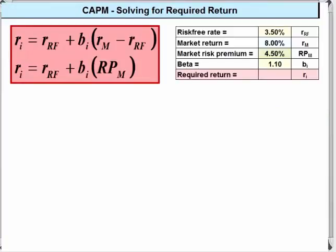In this first example, both the return on the market and the market risk premium are given. This is an easy one. Solving for the value on the left of the equals sign given data for all the other variables is pretty straightforward. We're going to substitute in everything we've got.